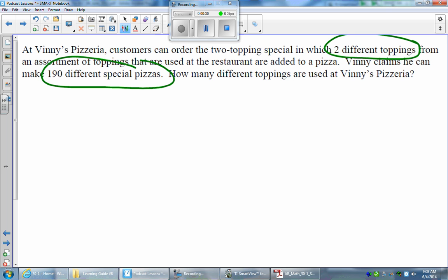All right, so we have two toppings that we need to choose from, from a certain selection. And the question wants you to find out how many different toppings are there in this selection. So we know that Vinny can make 190 different special pizzas. In other words, he can make 190 different combinations. So we're going to use the formula to find out how many toppings we're choosing from to begin with.